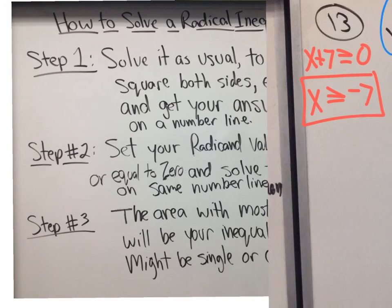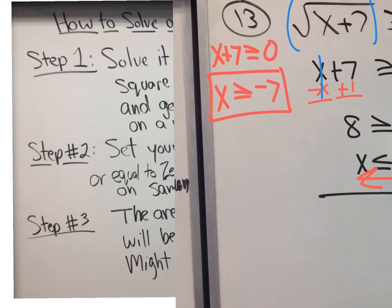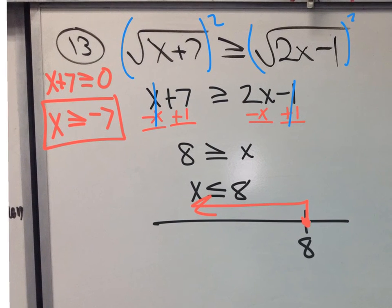But step 2 on this thing says that you set your radicand values all of them, set all your radicand values to be greater than or equal to 0 and solve them and then place them on the same number line. So we haven't done all of them. We've only done one of them. We did this radicand value. We set it to be greater than or equal to 0 and we solved it and we got this answer.